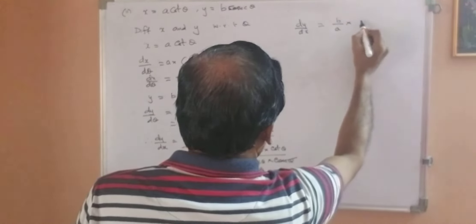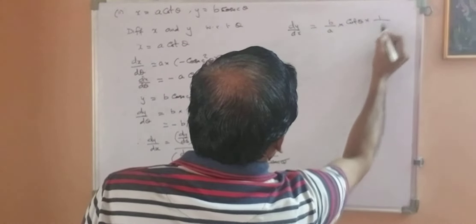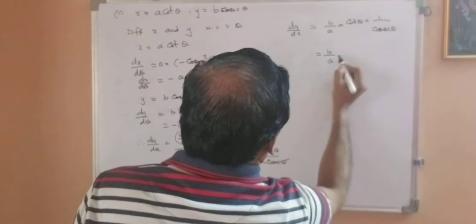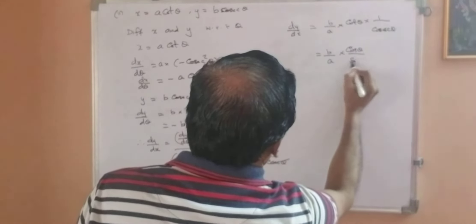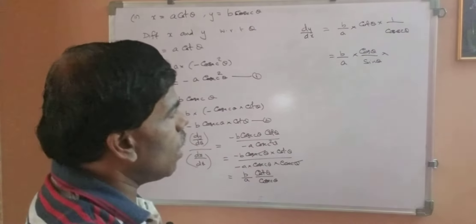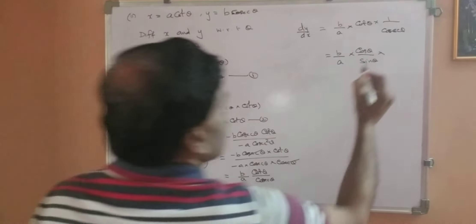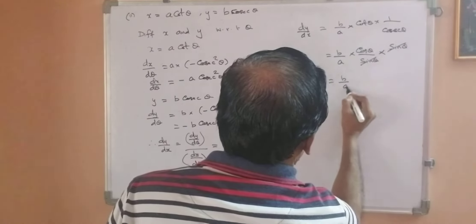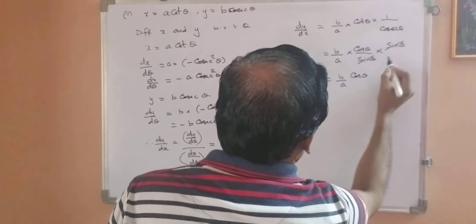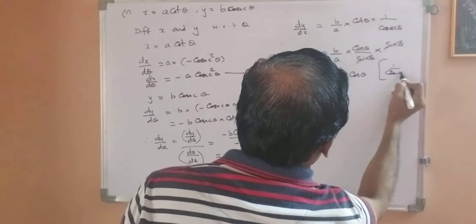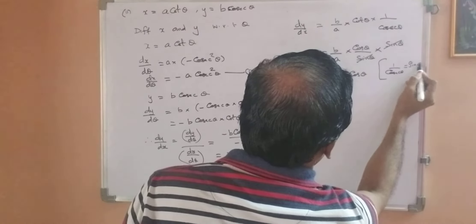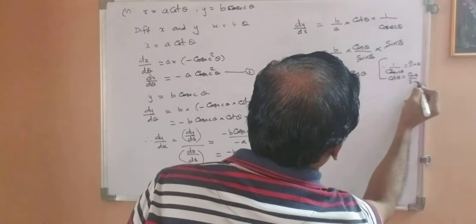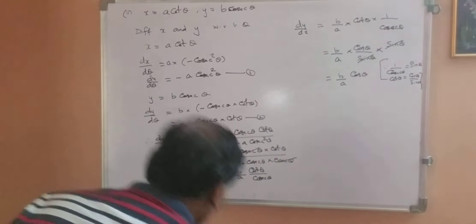So dy by dx equals (−b·cosec θ·cot θ) upon (−a·cosec²θ), which gives (b/a)·cot θ upon cosec θ. Now cot θ means cos θ upon sin θ, and 1 upon cosec θ equals sin θ. So cot θ upon cosec θ equals (cos θ/sin θ)·sin θ equals cos θ. Therefore dy by dx equals (b/a)·cos θ.